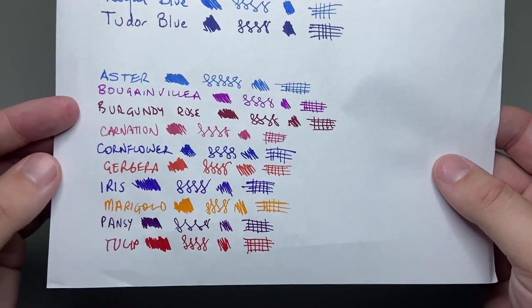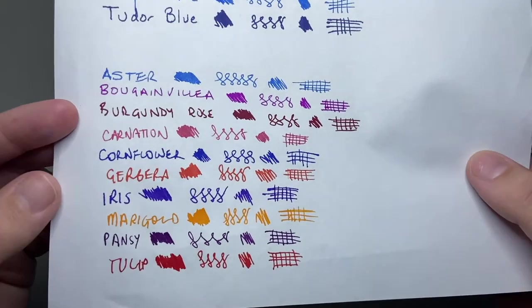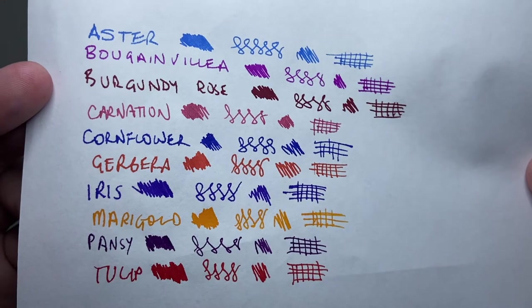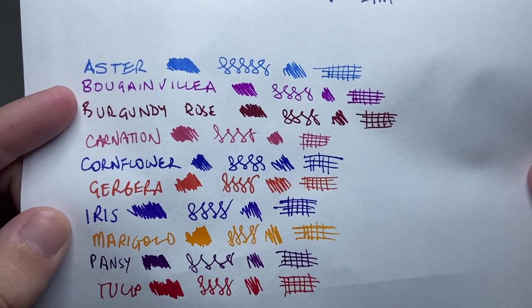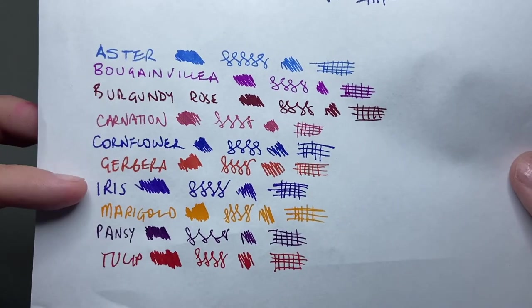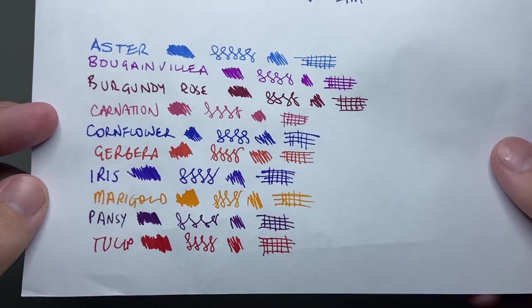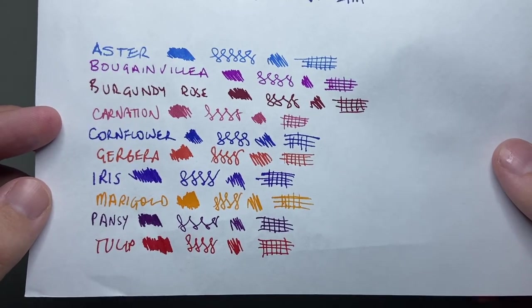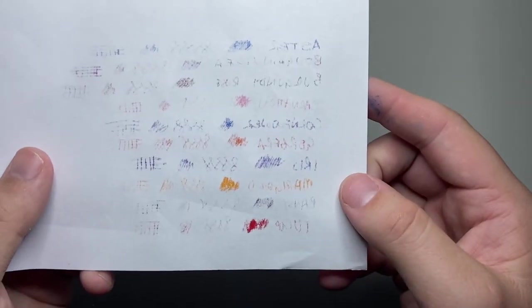The inks actually show their color beautifully on this paper. You lose a bit of the shading. There is a bit of, you know, feathering and stuff like that, like Cornflower feathers there a bit. Burgundy Rose feathers, Bougainvillea does. They all don't perform to their best on this paper, but this isn't fountain pen friendly paper. But I do think the colors look quite nice. And so the vibrancy of a few of those colors really comes out. But yes, there is a bit of feathering. And of course, on this paper, there is a bit of bleed.